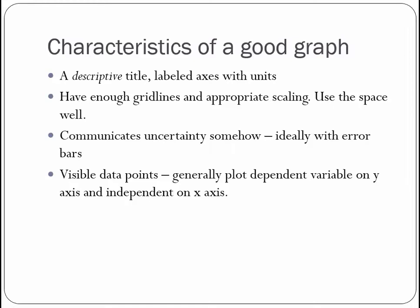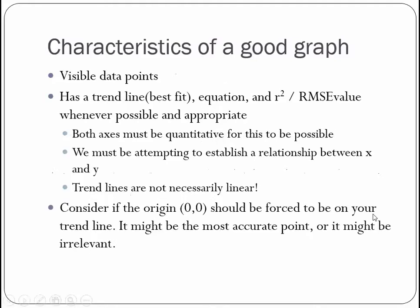Our graph should communicate the uncertainty in our measurements somehow. Error bars is a good way to do that. And again, we'll look at some examples. The data points should be visible. Sometimes with a computer generated graph, you can have not visible data points, which IB doesn't like, and it's not a very good thing in general. And generally, we want to plot the dependent variable on the y-axis and the independent variable on the x-axis. So that's something to keep in mind as well. Don't make your graphs backwards.